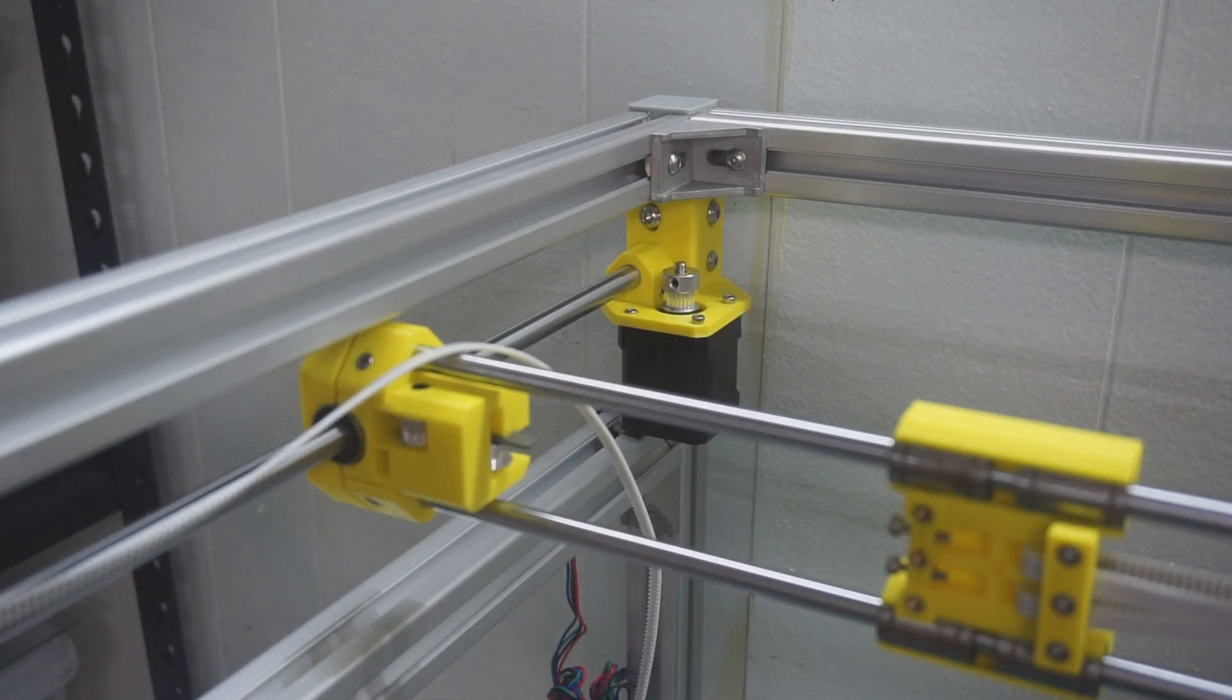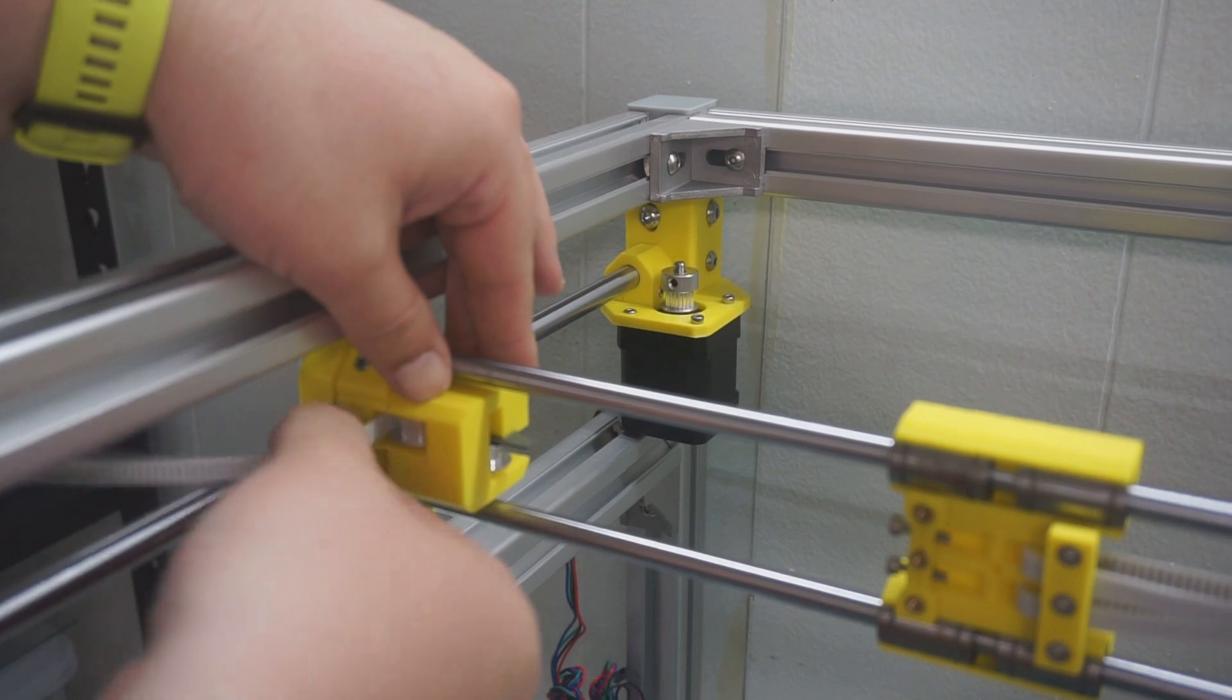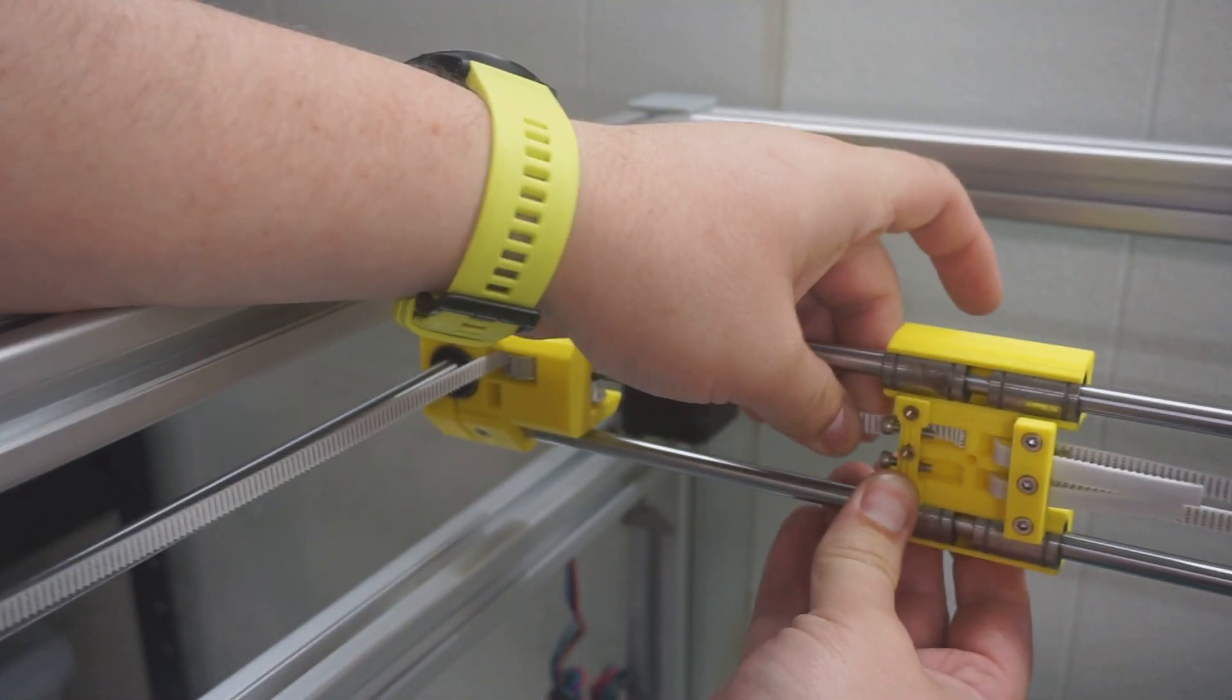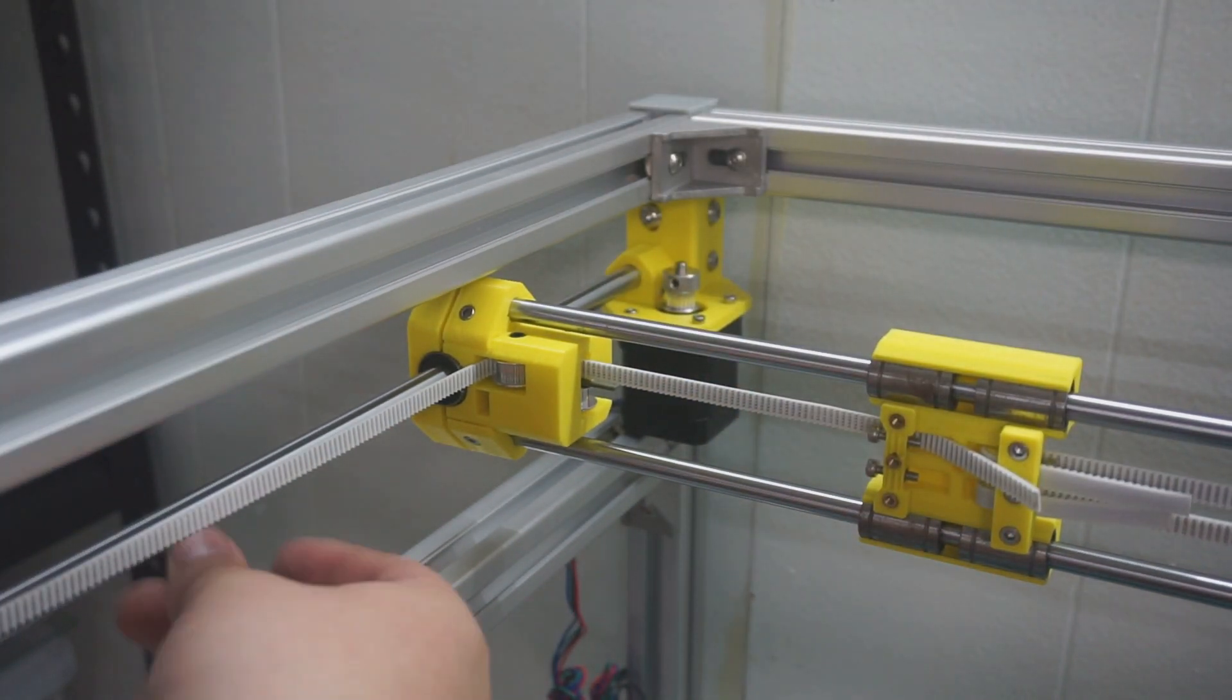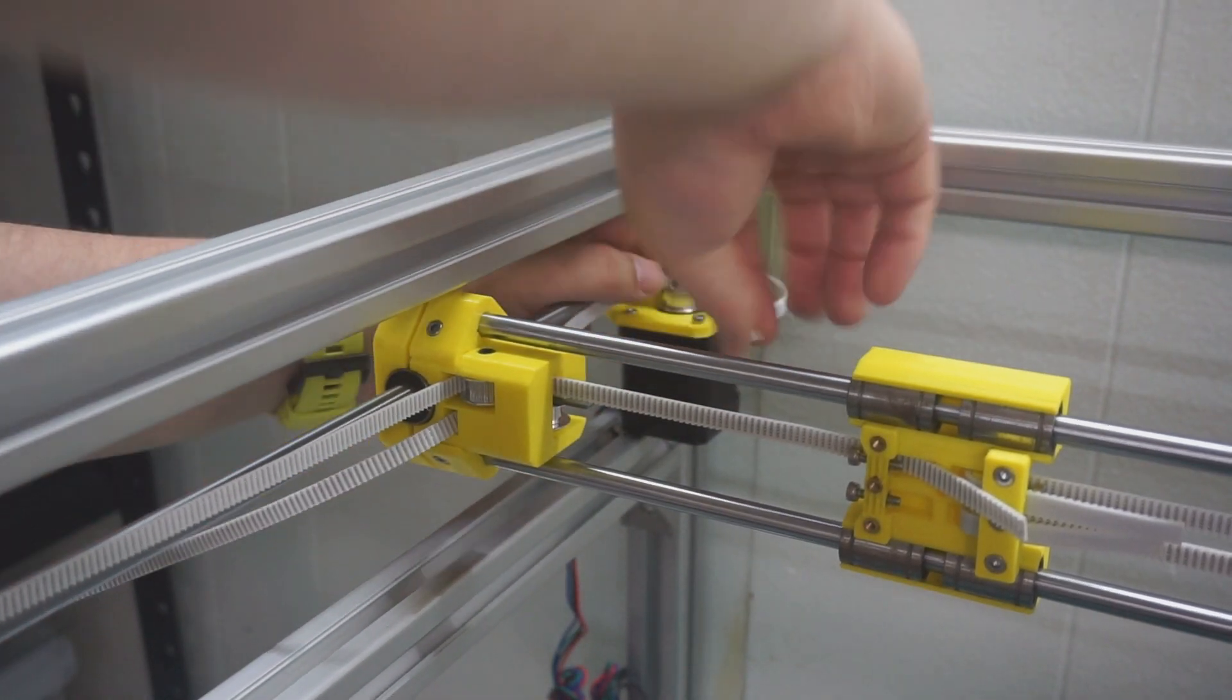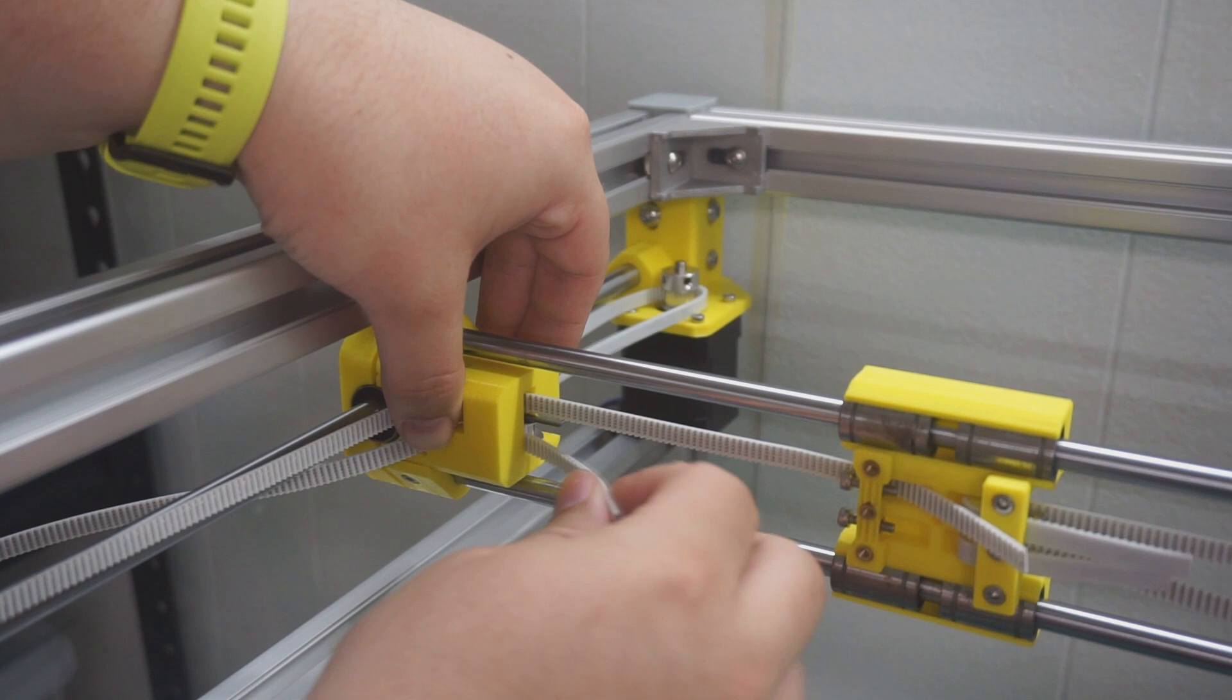Next we want to run both belts through the left hand side XY idler bracket. But this time we'll do the belts in reverse. So the top side runs past the toothed pulley and then the bottom belt runs through the slot and then around the toothed pulley on the stepper motor.